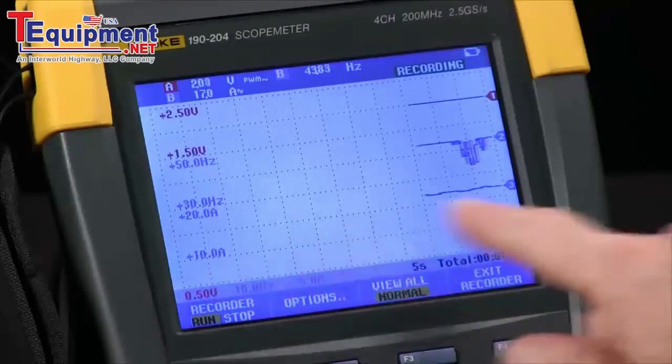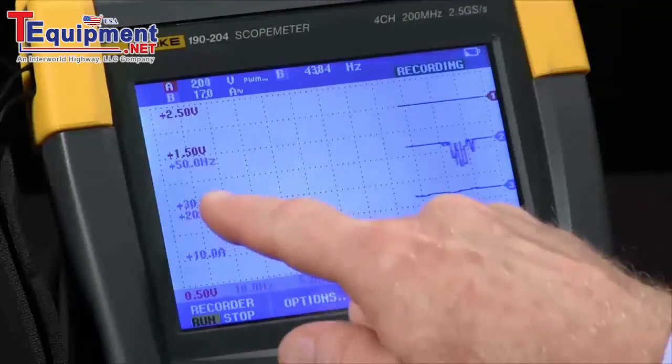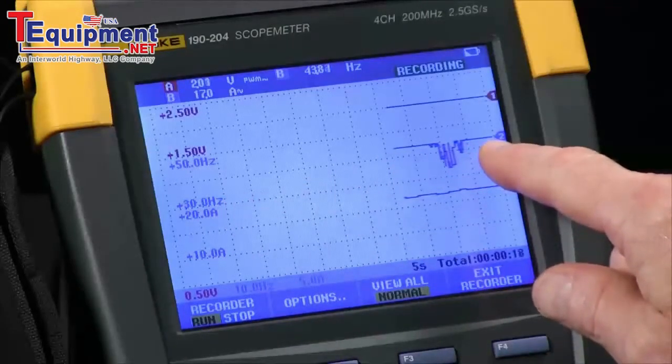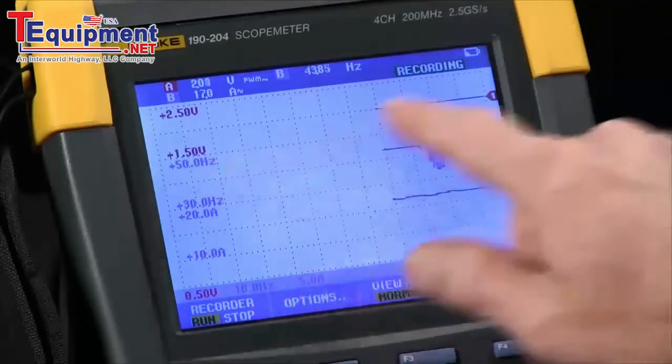You can see your amperage is the bottom trace, your frequency on channel B is the middle one, and your voltage being the top.